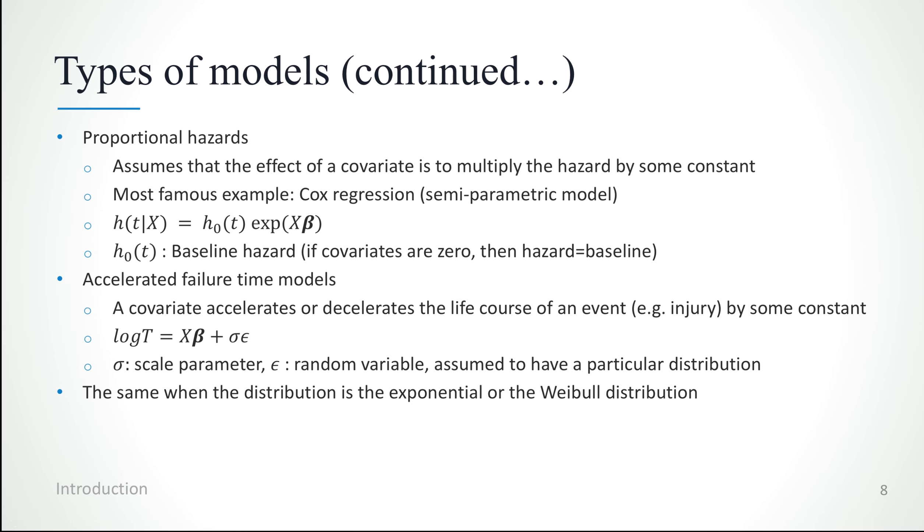which is defined by a scale parameter sigma and the random variable epsilon, which is assumed to follow a particular distribution. Proportional hazards and AFT models are equivalent when the distribution is exponential or the Weibull distribution. Note that here in the proportional hazards case, I referred to the most famous example, which is Cox's regression, which is a semi-parametric model. But the last sentence being about the two models being equal under the exponential or the Weibull distribution obviously is true when we use a parametric proportional hazards model, which is not that common, since usually when we use a proportional hazards model, this is Cox's regression.